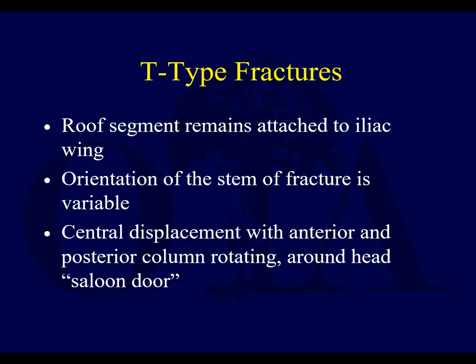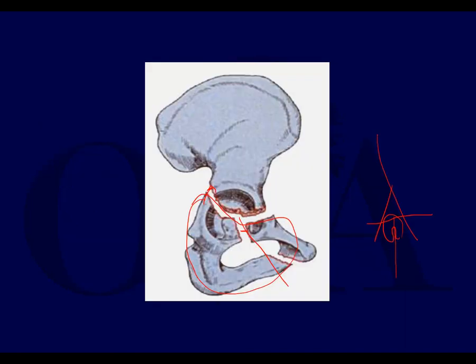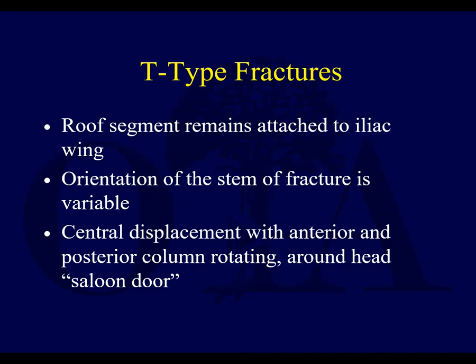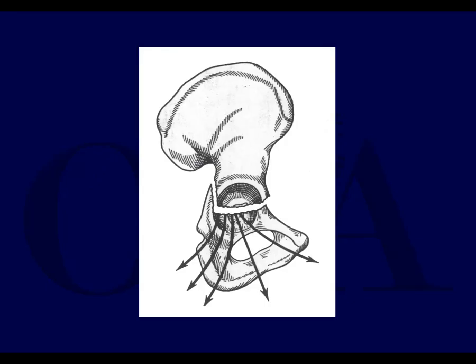The roof segment remains attached to the iliac wing. The orientation of the stem of the fracture is variable — it doesn't matter that much where exactly it exits, because once this piece becomes detached, you lose indirect control of it very easily. You can get a kind of saloon door phenomenon with the head going in between, and these are all the possible directions the vertical stem fracture can exit.